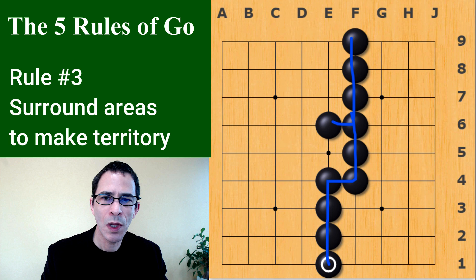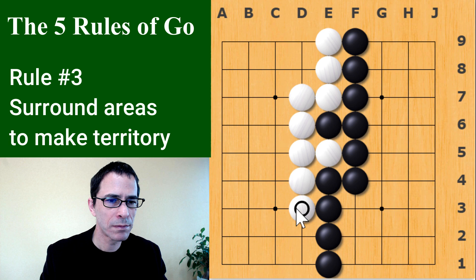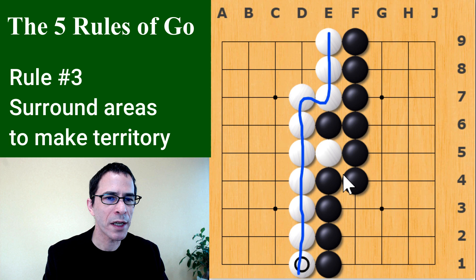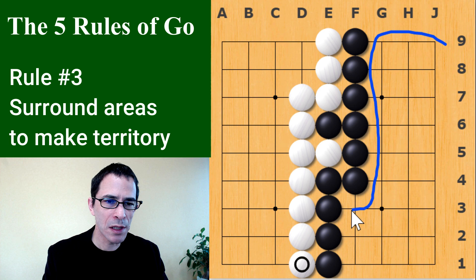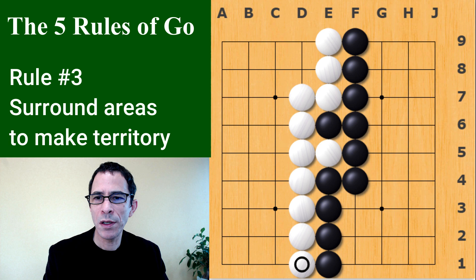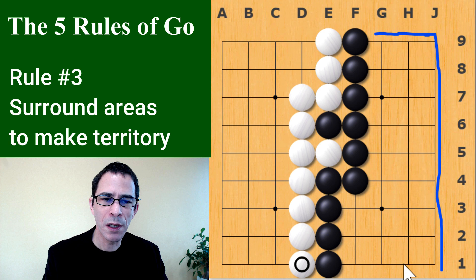We'll have some white stones forming a group as well. By connecting to each other they're forming a wall which is impossible for black to breach from that side. When this happens, this area is black's territory and this area is white's territory.